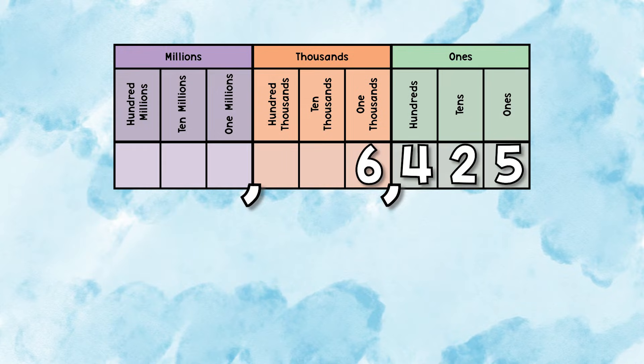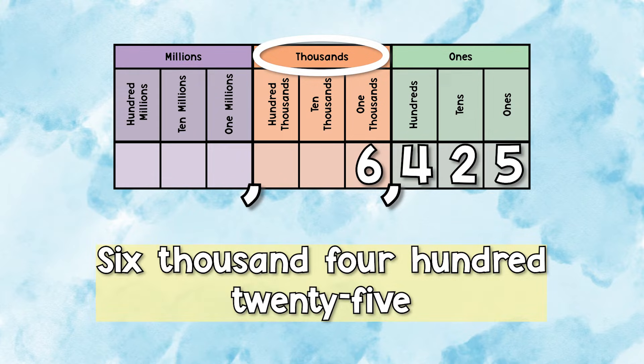The six is in the thousands place. So when we see the comma, we're going to say the word thousands. So this number would be 6,425.